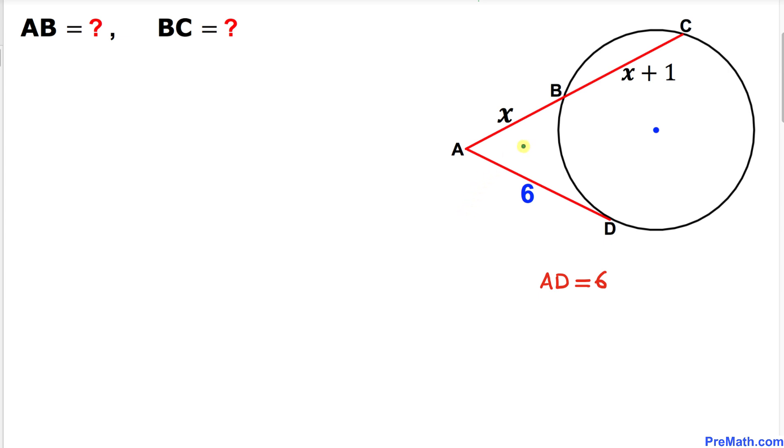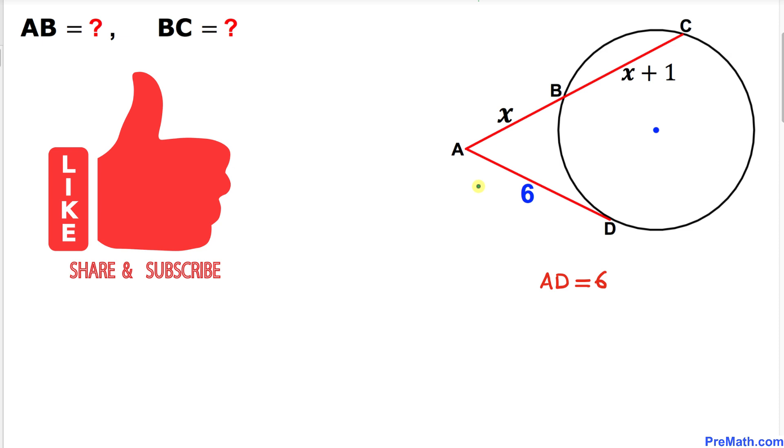Welcome to PreMath. In this video tutorial, we have a secant line and a tangent line. As you can see in this figure, line segment AD is 6 units. We are going to calculate line segment AB and line segment BC. Please don't forget to give a thumbs up to this video.